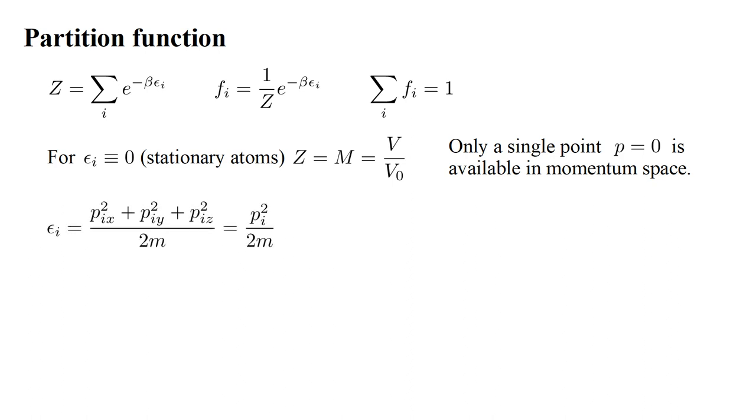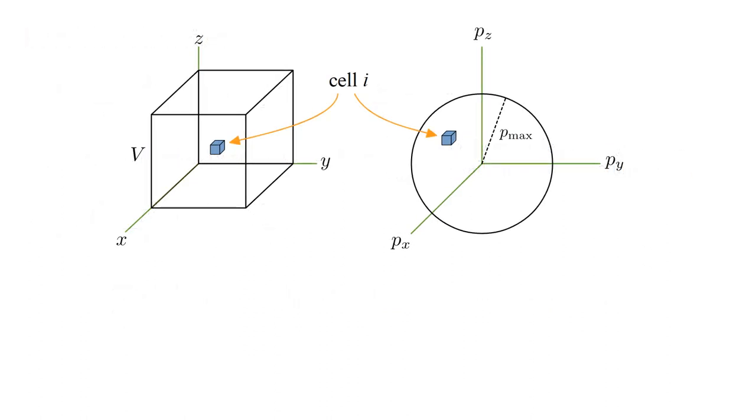For atoms with kinetic energy, epsilon_i equals p_i squared over 2m. The terms in the partition function are no longer simply one. Instead, they are exponential functions of energy. But, let's assume Z still represents the number of phase-space cells available to an atom. Each cell has volume h cubed, so we can think of Z h cubed as the volume of phase space available to atoms. To get a simple estimate of the partition function, let's assume that atoms are confined to a spherical region of momentum space, with radius p_max.